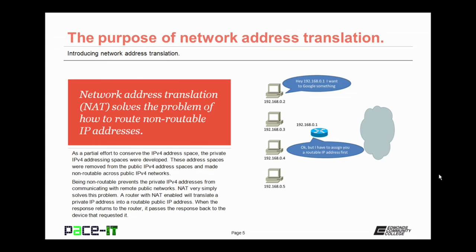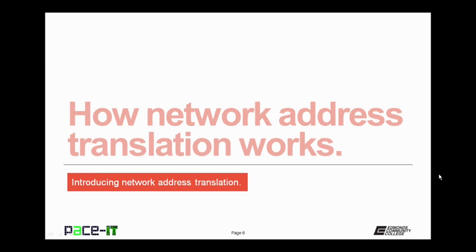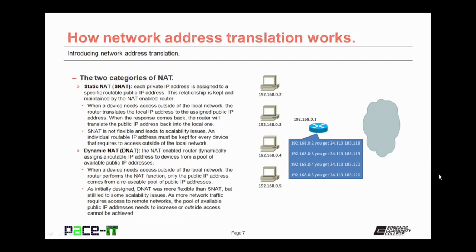A router with NAT enabled will translate a private IP address into a routable public IP address. When the response returns to the router, it passes the response back to the device that requested it. So now that we've covered the purpose, let's talk about how Network Address Translation works.